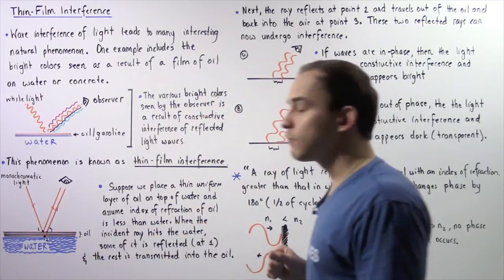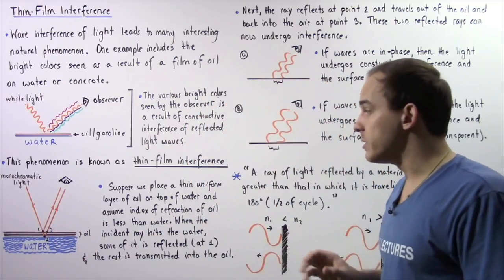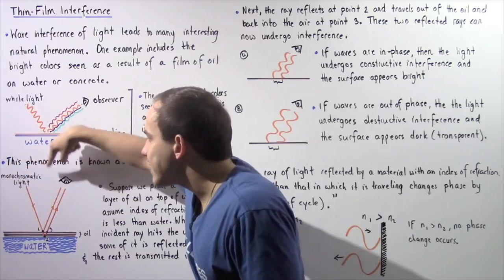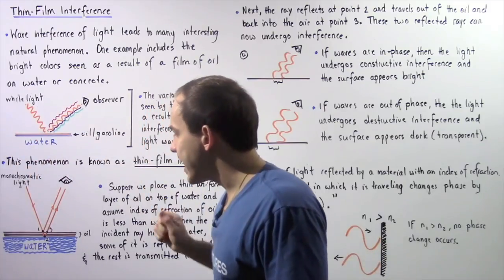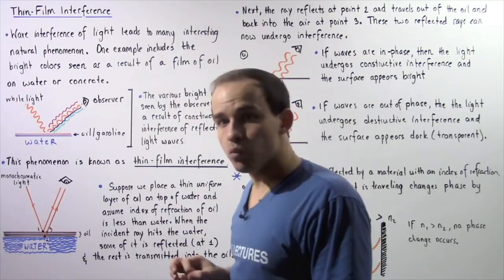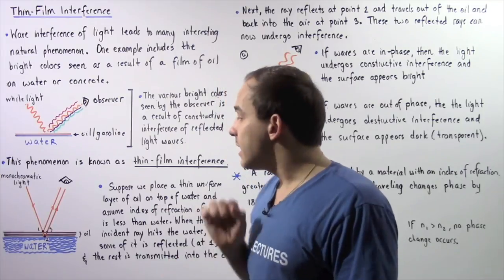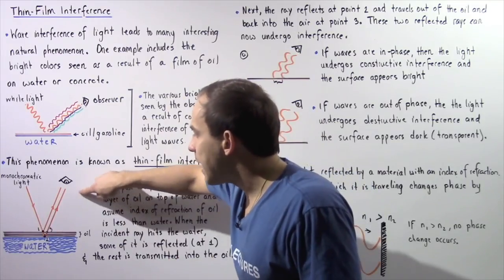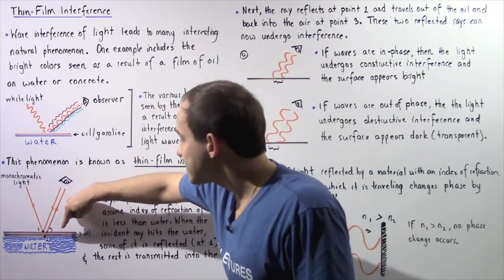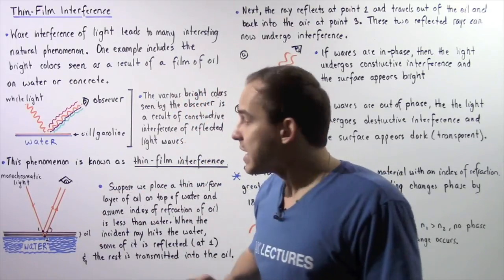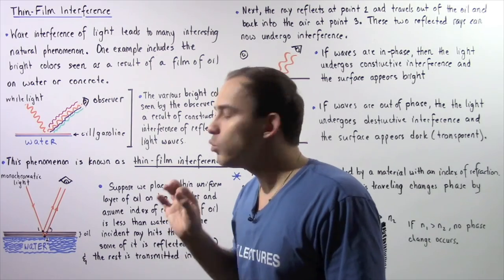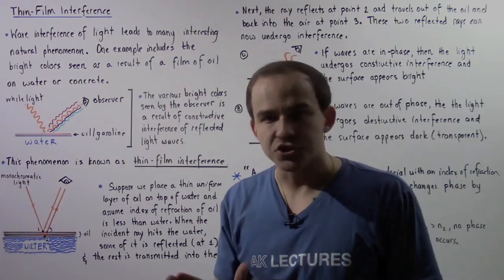Going back to our diagram — notice that when the monochromatic light ray bounces off the oil at position one, because the index of refraction of air is less than the index of refraction of oil, our monochromatic ray of light will undergo a phase change.